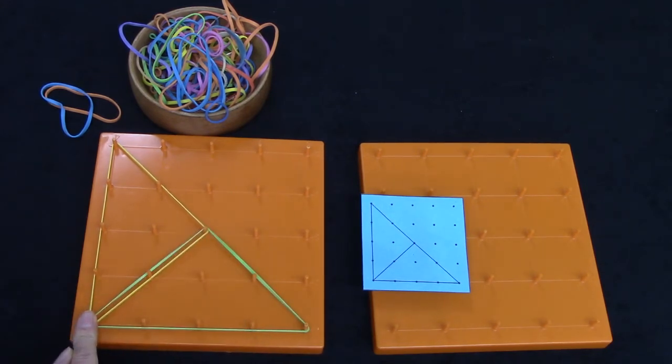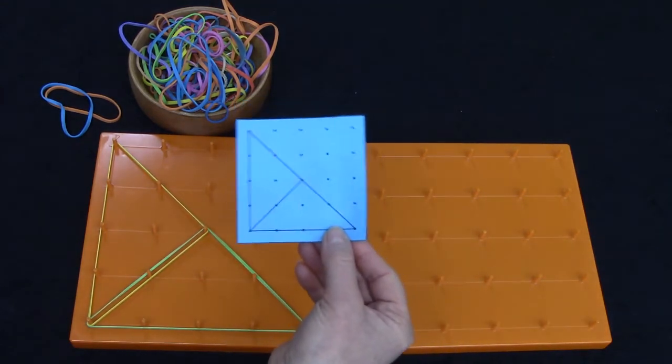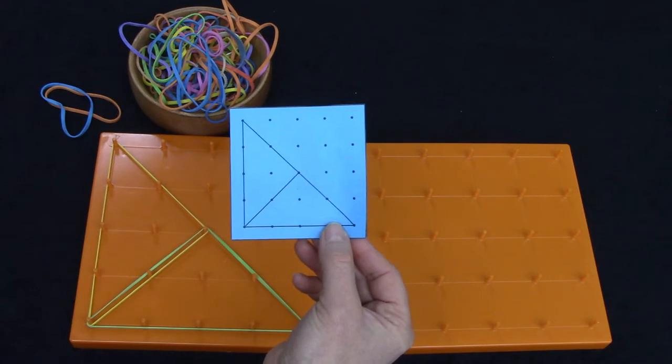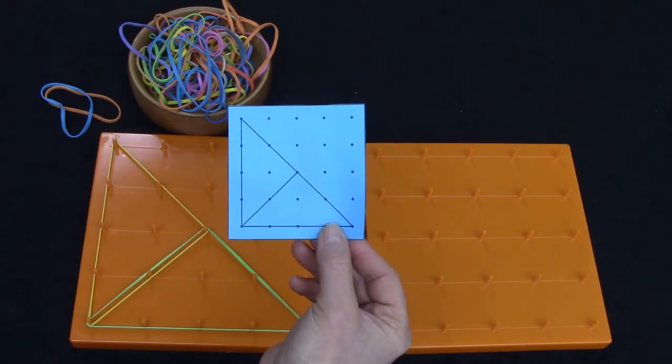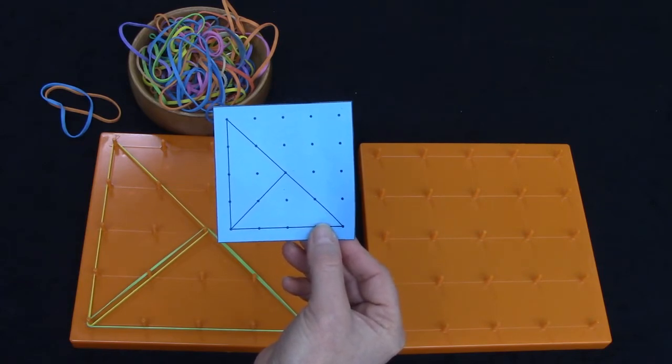I used a green rubber band. These two triangles are the same shape and the same size. That means they're congruent. Hmm are they the same shape and the same size as the triangles on the paper? They're not are they? They're the same shape but they're not the same size.